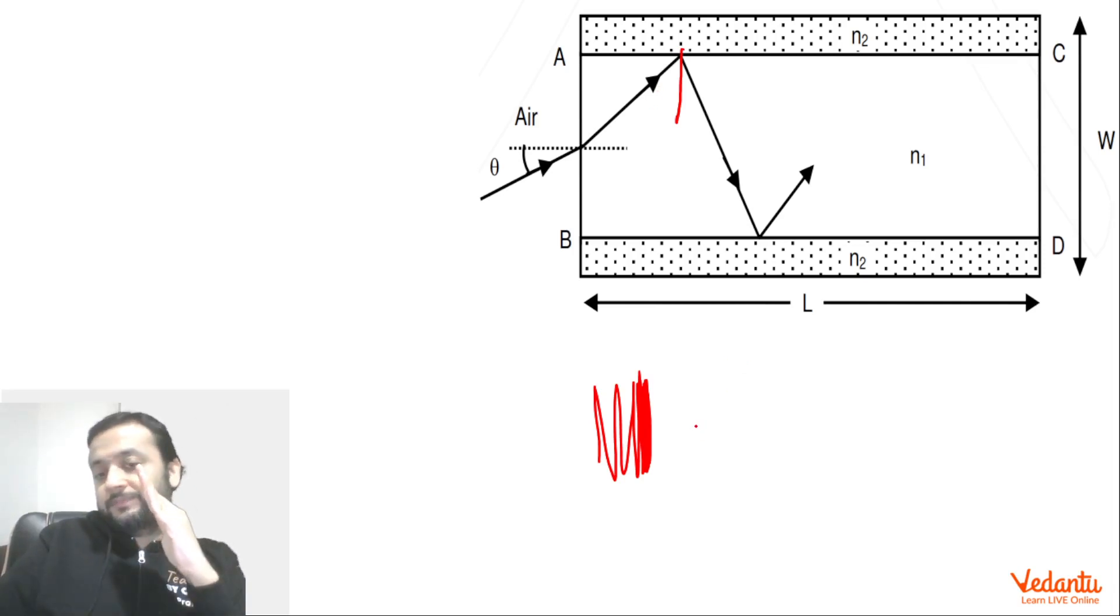That means if we keep on increasing the inclination of the ray, if we keep on increasing this angle such that it becomes just equal to theta critical, at that instant TIR will start happening. In the limiting case, theta critical, we will not increase beyond that because we want the ray to travel as much distance as possible.